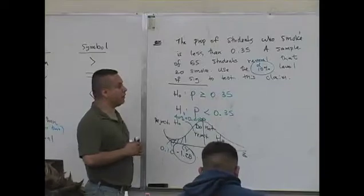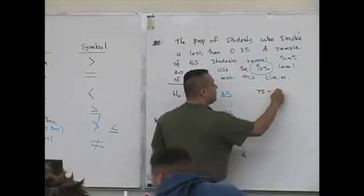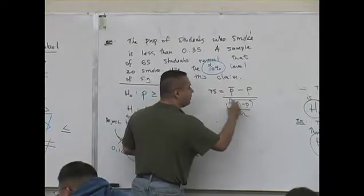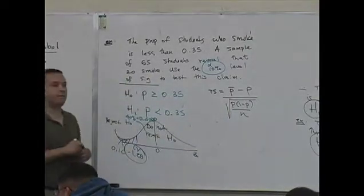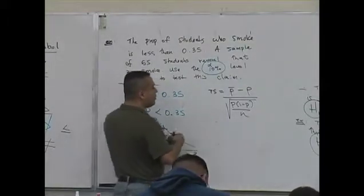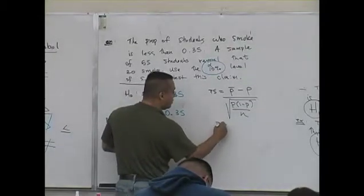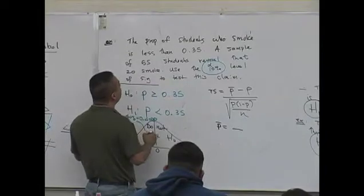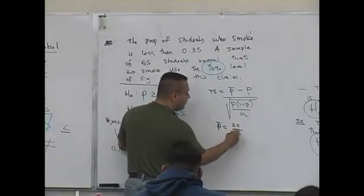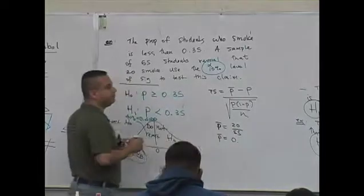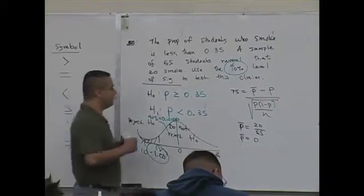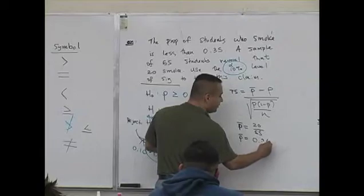The test statistic formula is p-hat minus p divided by the square root of p times 1 minus p over n. So we have to determine the sample proportion. What's the sample proportion? 20 over 55. What does that become? That's 0.364.